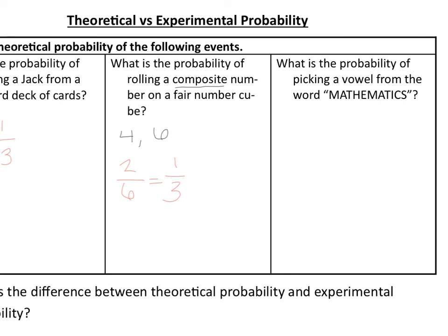The last one: what's the probability of picking a vowel from the word mathematics? The vowels are A, E, I, O, and U. We don't need to worry about Y since there isn't one here. Counting the vowels, we have an A, an E, another A, and an I — that's four vowels out of eleven possible letters. So the probability of picking a vowel should be four out of eleven, but we know it probably wouldn't happen exactly.